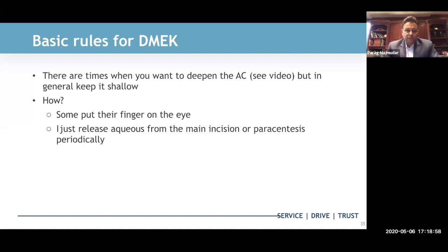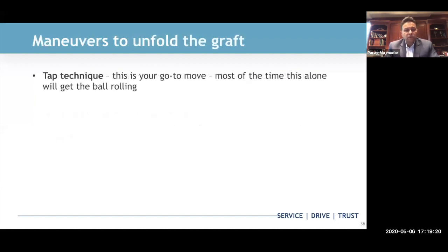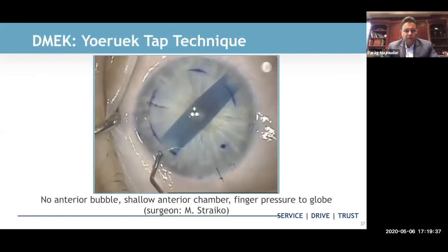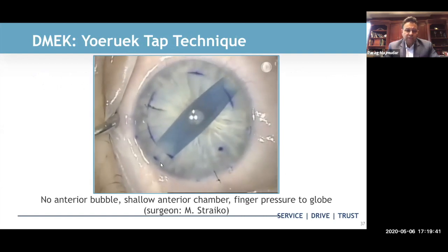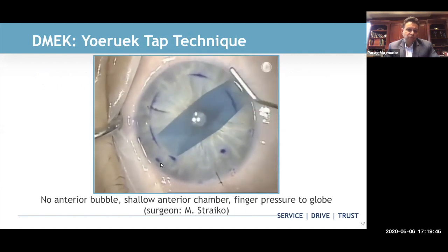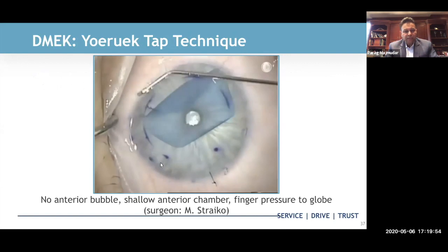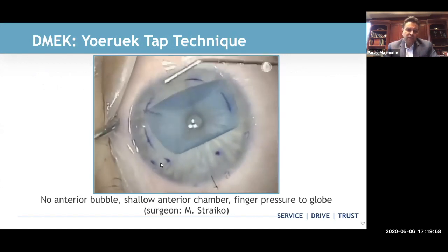There are times when you want to deepen the anterior chamber. To flatten the chamber, I like to release aqueous from the main incision or paracentesis periodically using my cannula — I think that's the most elegant way. The tap technique is your go-to move. Most of the time this is the only thing you need, and it gets the ball rolling. You use your finger to push gently on the globe and just tap the surface. That redistributes aqueous forces and forces the leaflets of the graft open. A little tap, a little tap — that is probably 90% of your battle right there.